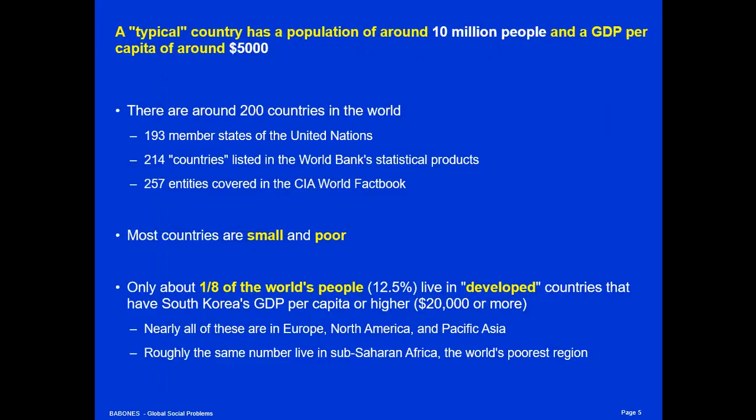Another thing that many people get thrown by is the fact that a typical country in the world today — the median country in the world — has a population of around 10 million people and a GDP per capita of around $5,000. To put that in perspective, Australia has 24 or 25 million people and a GDP per capita of around $50,000. So Australia would be both a large and an extremely wealthy country compared to the average country in the world.